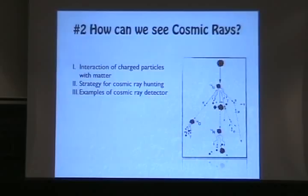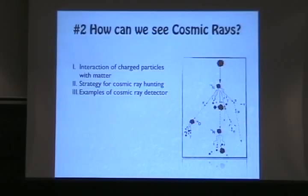This lecture, we will talk about how we can see cosmic rays. Usually we would not use the word 'see' because we cannot see them — even now we are bombarded by cosmic rays but we cannot see them. So usually we use 'measure.' But I wanted to use 'see' because it's more direct. So first of all, we will talk about the interaction of charged particles, because that will give us a clue about how we can detect cosmic rays.